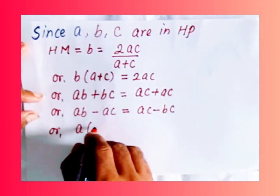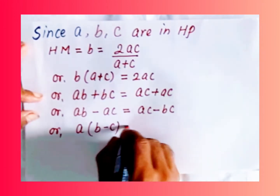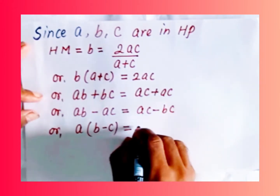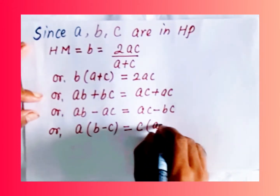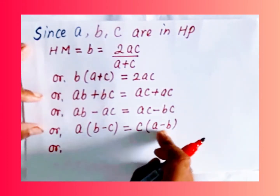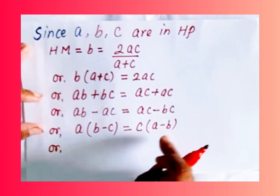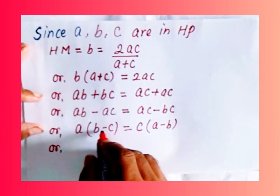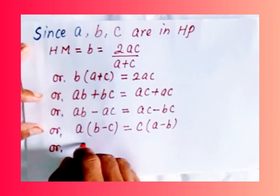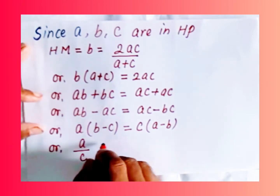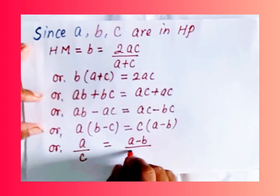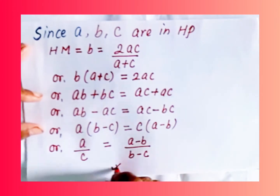Taking A common on the left gives A(B minus C), and taking C common on the right gives C(A minus B). Interchanging, shifting (B minus C) and C to opposite sides, this becomes A/C equals (A minus B)/(B minus C), thus proving the HP case.